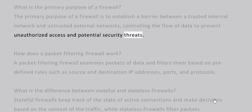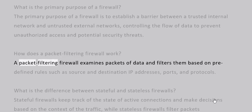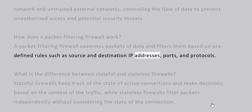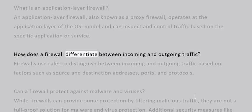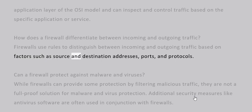How does a packet filtering firewall work? A packet filtering firewall examines packets of data and filters them based on predefined rules such as source and destination IP addresses, ports, and protocols. How does a firewall differentiate between incoming and outgoing traffic? Firewalls use rules to distinguish between incoming and outgoing traffic based on factors such as source and destination addresses, ports, and protocols.